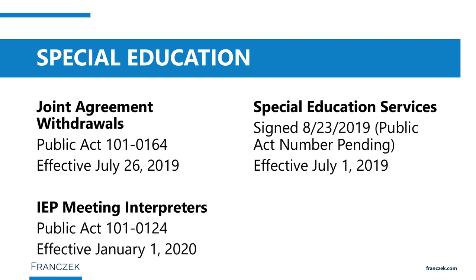The last major provision is response to intervention. RTI or MTSS is already in place for determining eligibility for specific learning disabilities. This new law does not limit additional testing for that category, but it does allow RTI or MTSS data to be used when determining eligibility for other disability categories. It also requires that parents participate in the intervention stage — which may be new for many districts that have done that process internally.